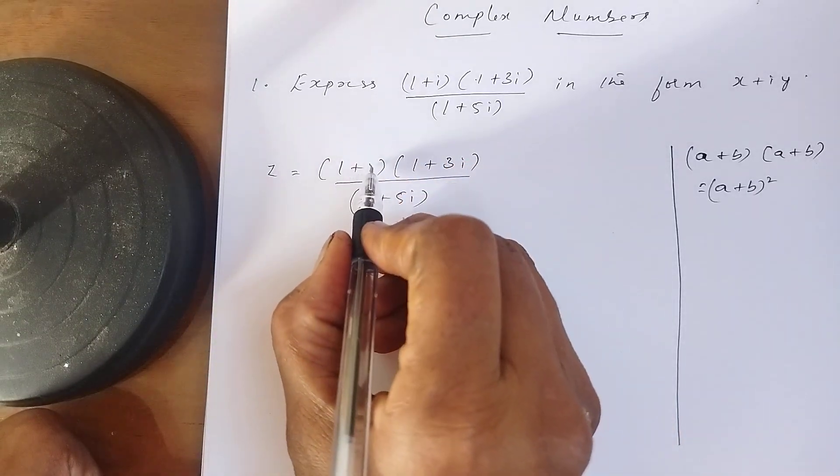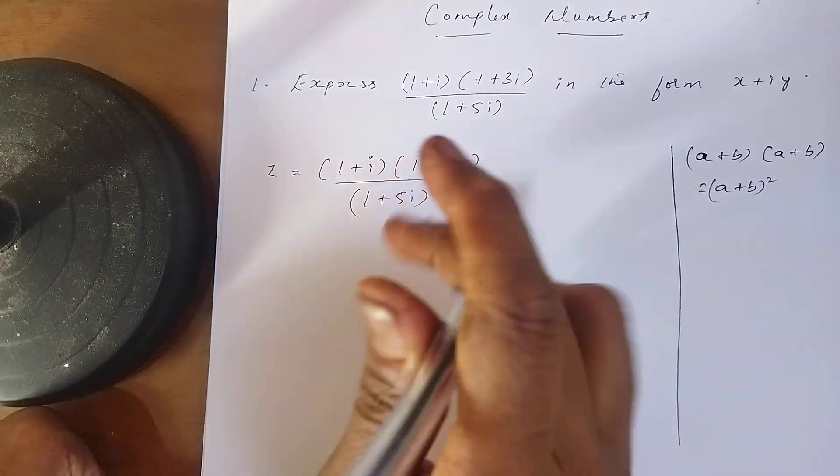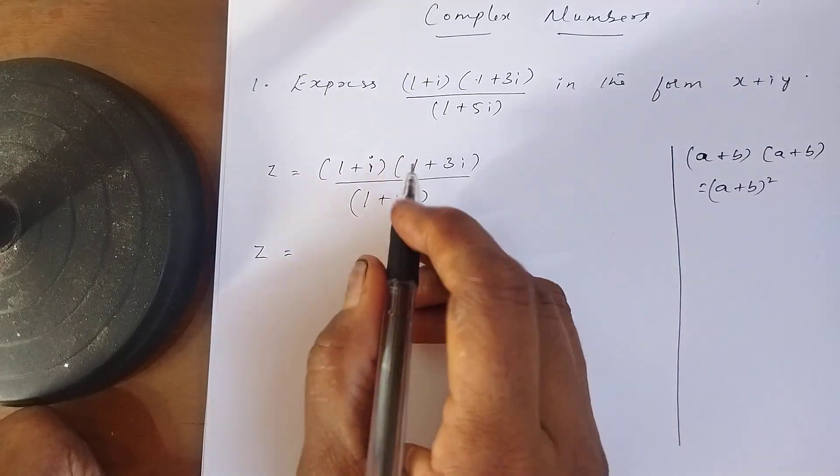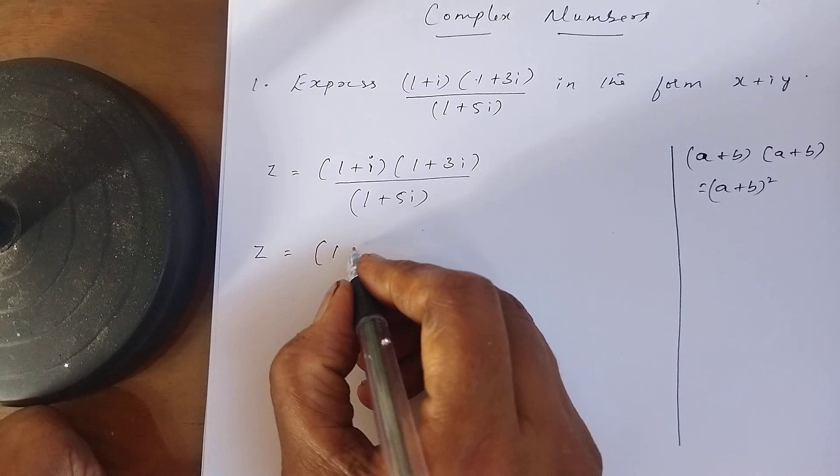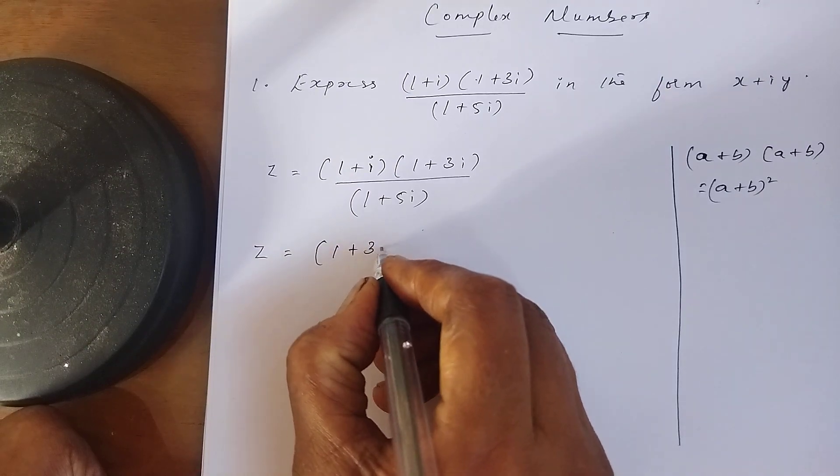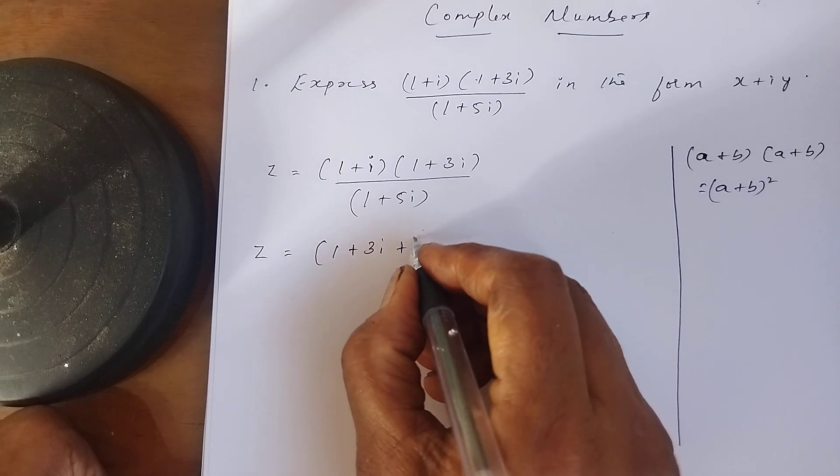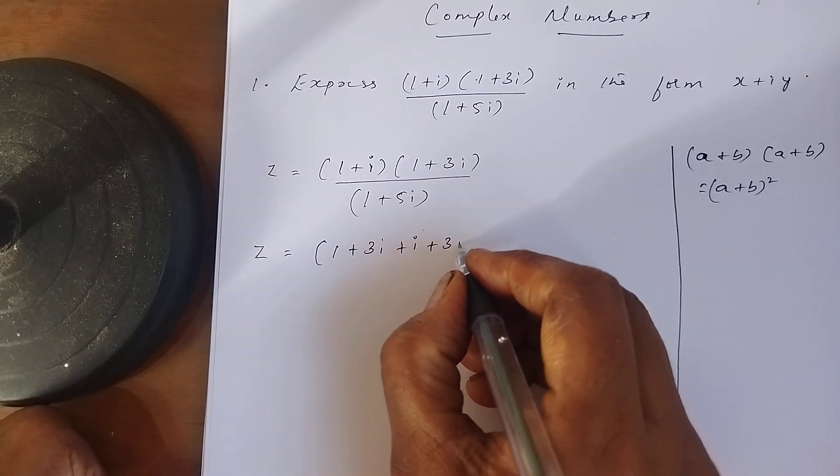Then solve this above problem. Solve the numerator first. Multiply: 1 into 1 is 1, 1 into 3i is 3i, i into 1 is i, i into 3i is 3i².